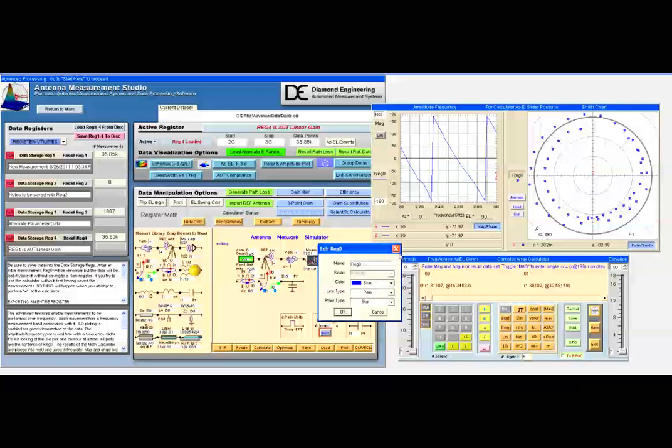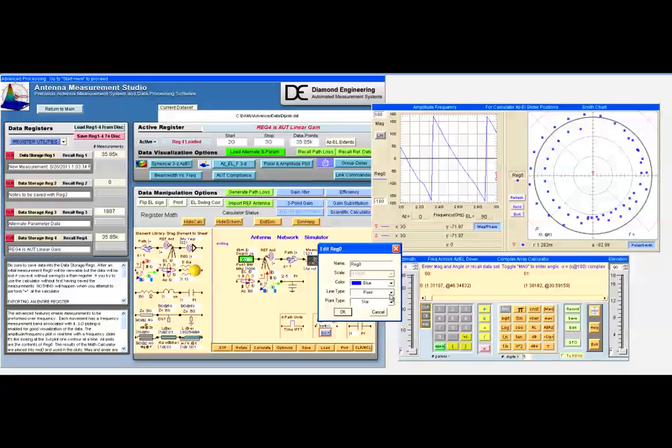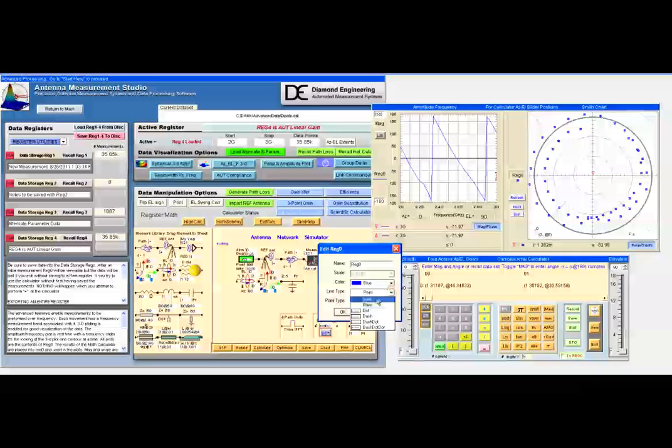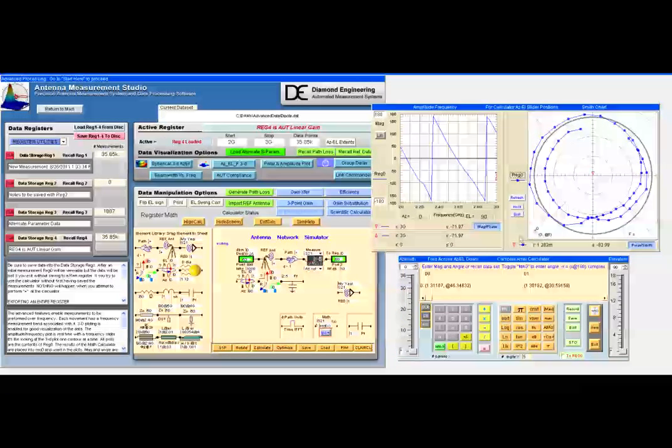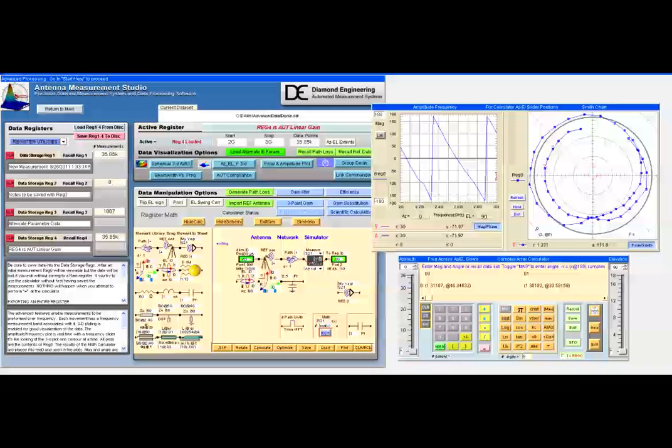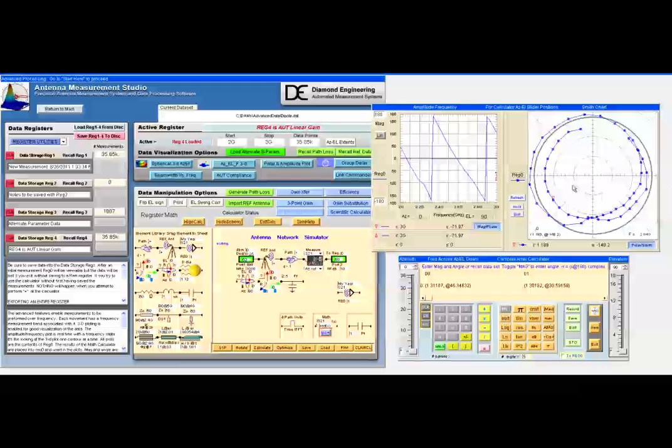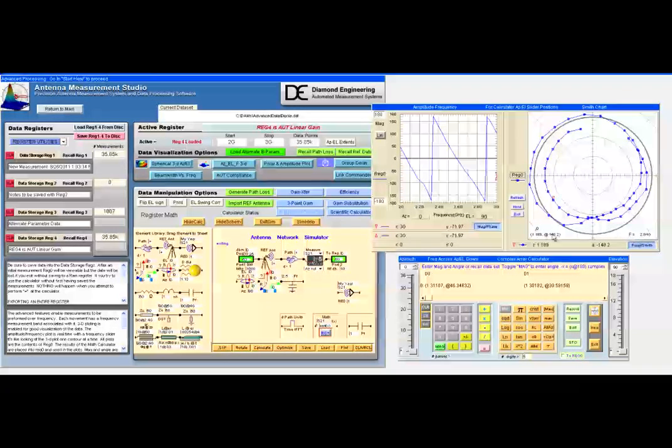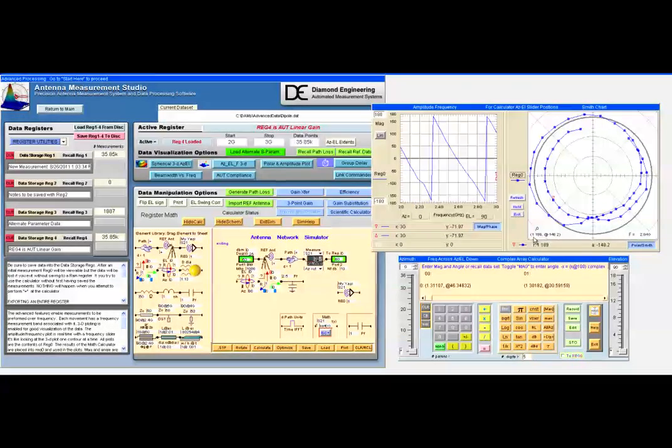We can connect the lines and get an idea of how the phase changes. If we place a marker on any one data point, we see the frequency, and in the case of reflection, we see the reflection coefficient. In this case, it's the gain, 1.189 at 148 degrees.